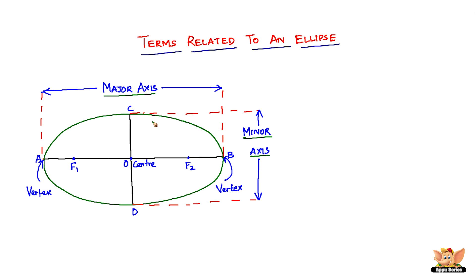These are the most important terms related to an ellipse. This video is not done yet because we have another quick diagram to look at. We're going to look into the length of the major axis and the length of the minor axis — how do you calculate that.